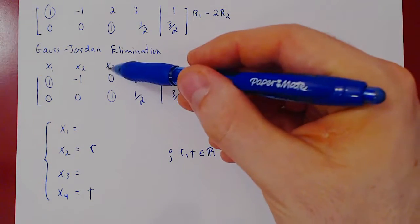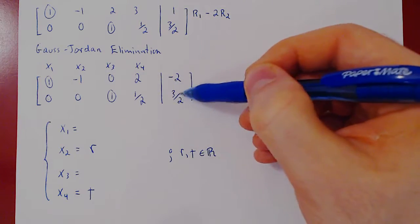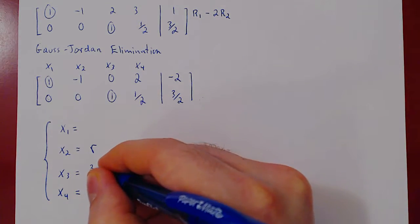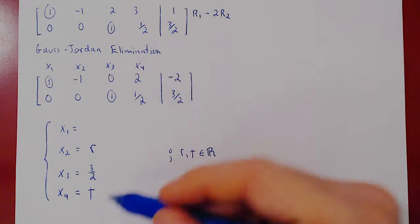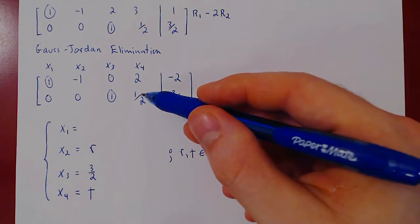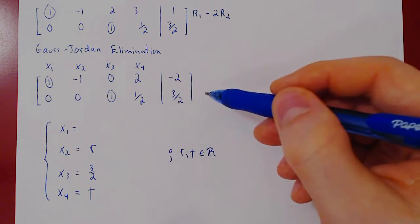And now we solve for the leading variables. Let us solve for x3 using its corresponding leading one. So x3 will equal 3 half. There's a positive 1 half x4, which is 1 half t. If you set this on the other side of the equality, this becomes a negative 1 half t.